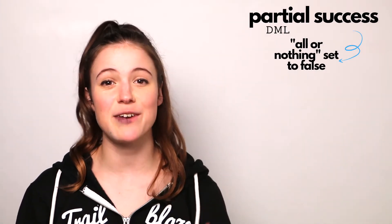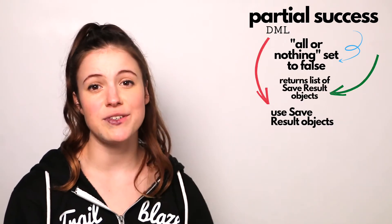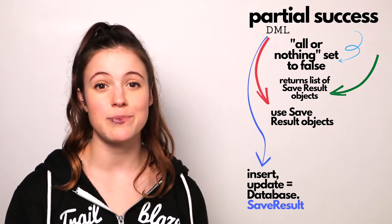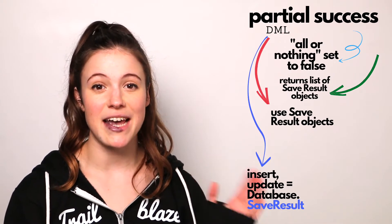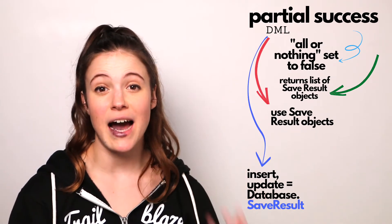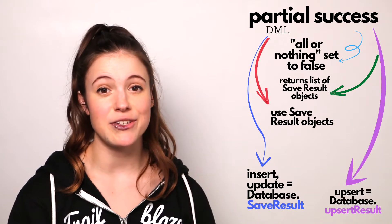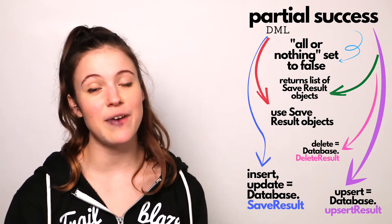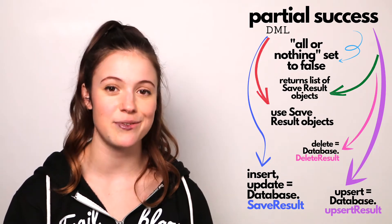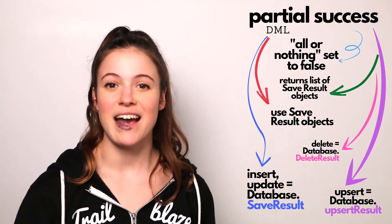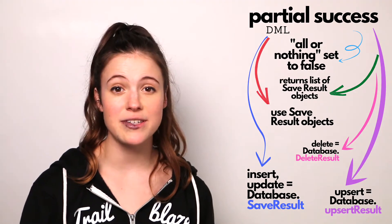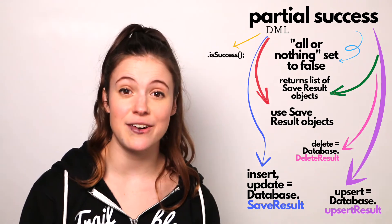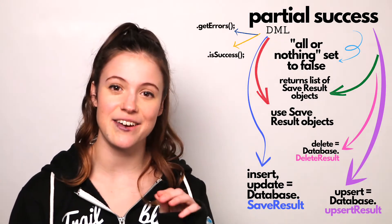Introducing our save result object. If we've used an insert or update action, then our resulting object is going to be Database.SaveResult. If we've used the upsert DML command, then our return value is going to be Database.UpsertResult. And if we use delete, then our return value is going to be Database.DeleteResult. Each of these are all in a list, and you can check if they have been successful or not by using the method isSuccess, and if there's been any errors, use getErrors.